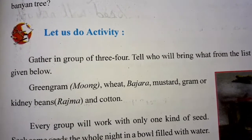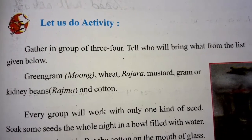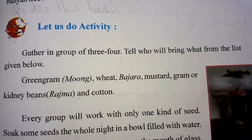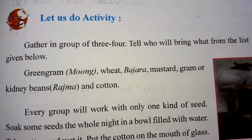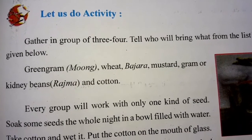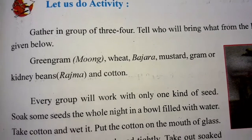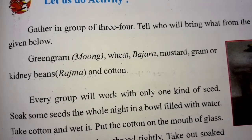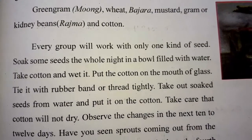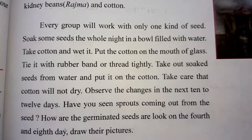Now based on that, here is an activity. Gather in groups of three or four. Tho aapko teen se char bachyon ka ek group banana hai. Tell who will bring what from the list given below. Aur aapko decide kerna hai ki niche joh list diya, usmein se kaun sa group kya layega. So: green gram (moong), wheat, bajra, mustard, gram, kidney beans (rajma), and cotton. Every group will work with only one kind of seed. Tho har ek group woha ek ki tarah ke seed ke saath kaam karega.